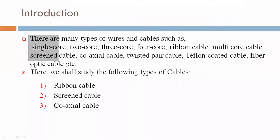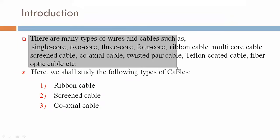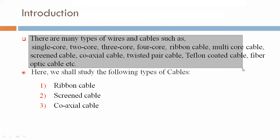There are many types of wires and cables such as Single-Core, 2-Core, 3-Core, 4-Core, Ribbon Cable, Multi-Core Cable, Screen Cable, Coaxial Cable, Twisted Pair Cable, Teflon Coated Cable, Fibre Optic Cable, etc.